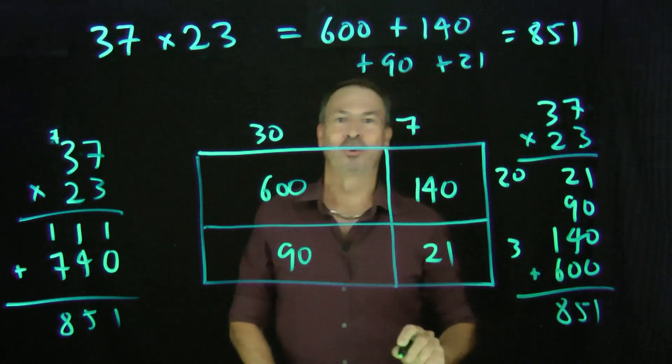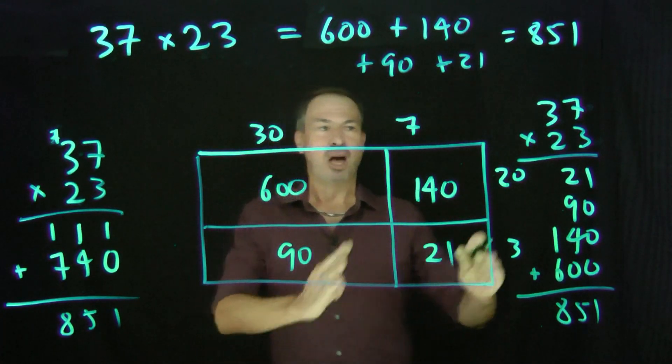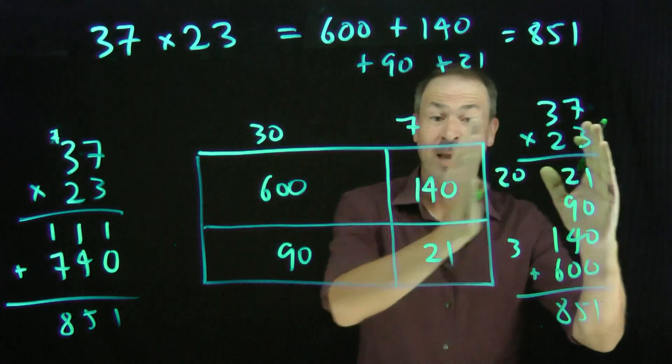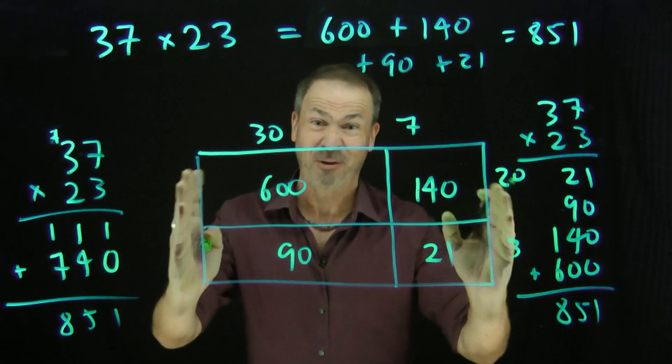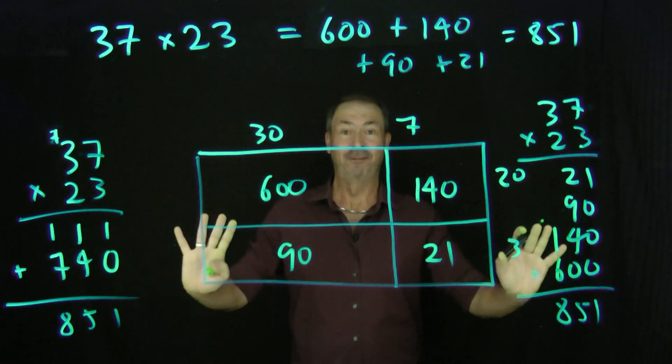And of course you get 851. Of course you get 851. So a lot of schools now teach students this way. They might draw the picture to go with it or they might not. I think drawing the picture is really the way to go. But that's all fine.